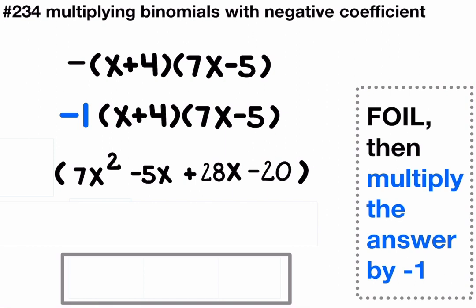Now let's bring down the negative 1. Before we distribute the negative 1, let's simplify what's inside parentheses. Negative 5x and 28x are like terms.